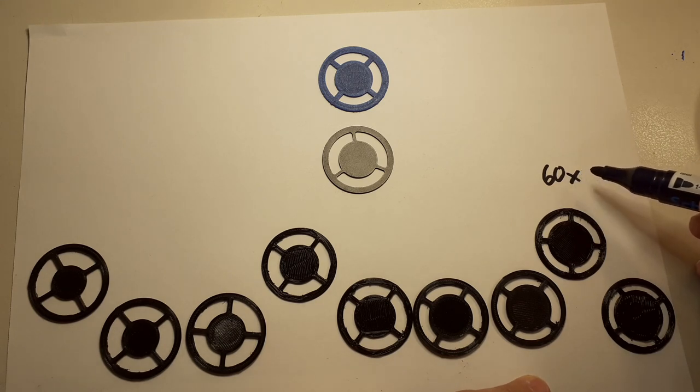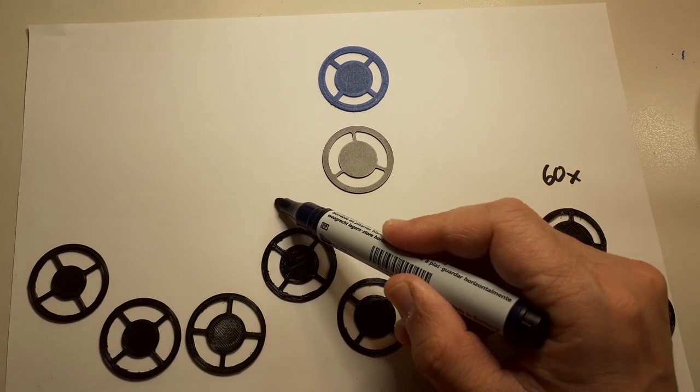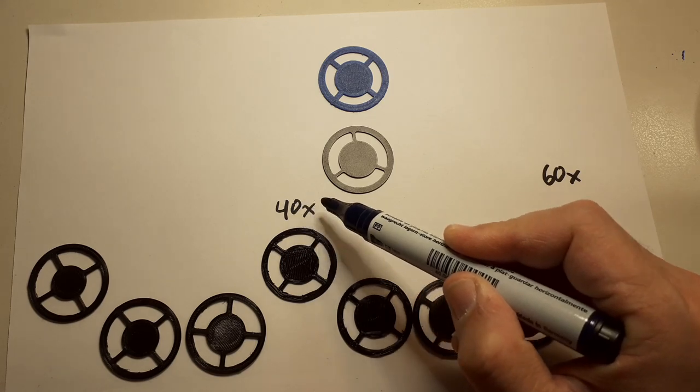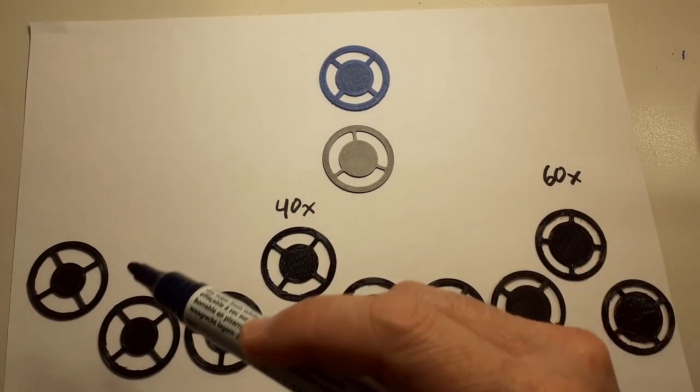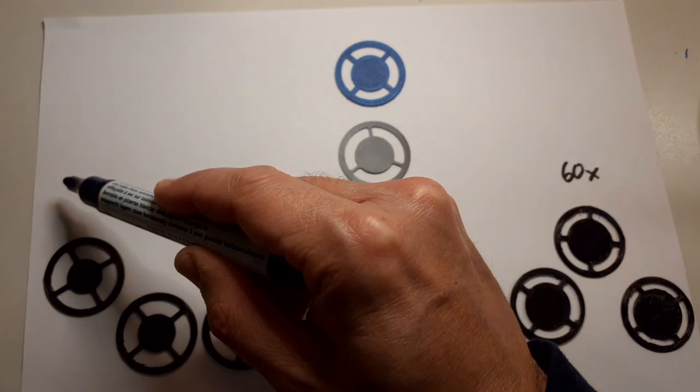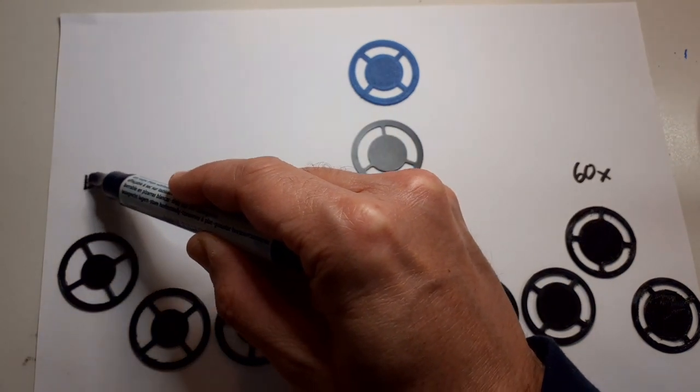So the one on the right side works best for the 60 times magnifying objective and the one in the middle works best for the 40 times magnifying objective.